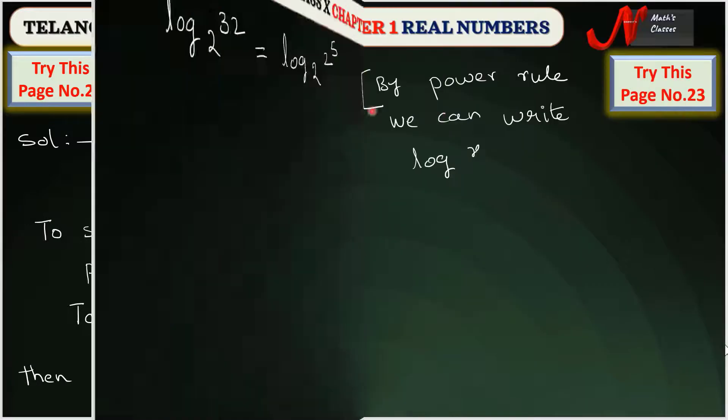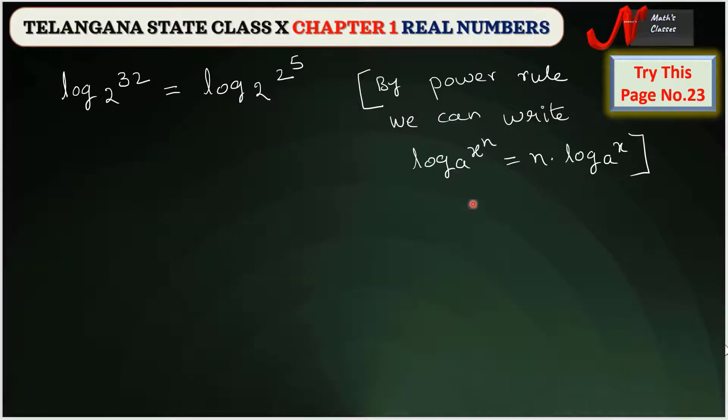By the power rule, we can write logₐ(xⁿ) = n·logₐx. Using this power rule, we write log₂(2⁵) = 5·log₂2.